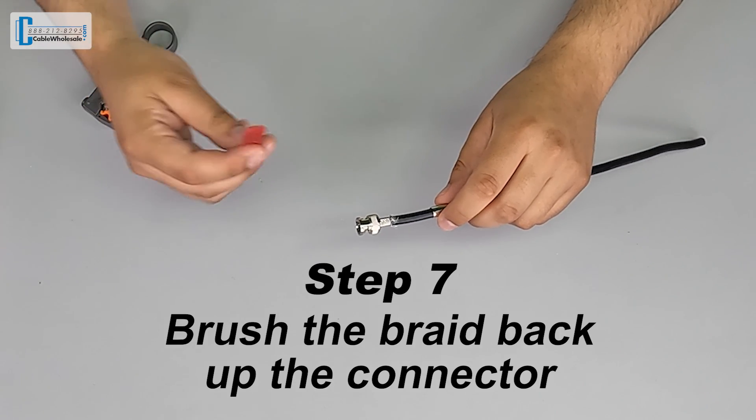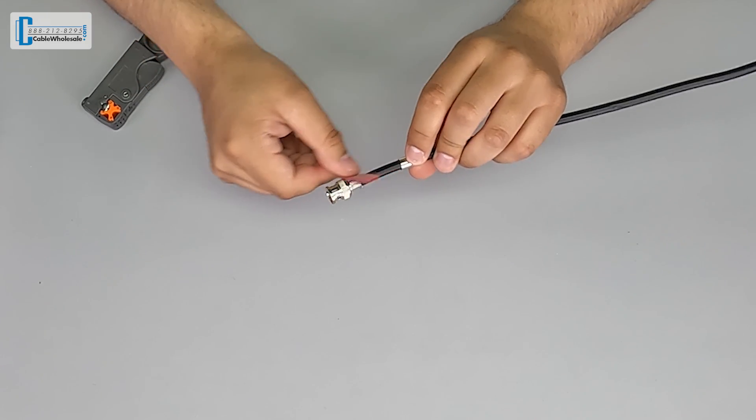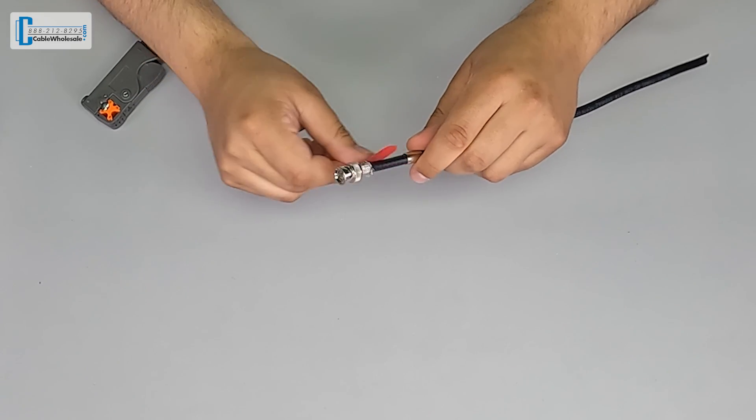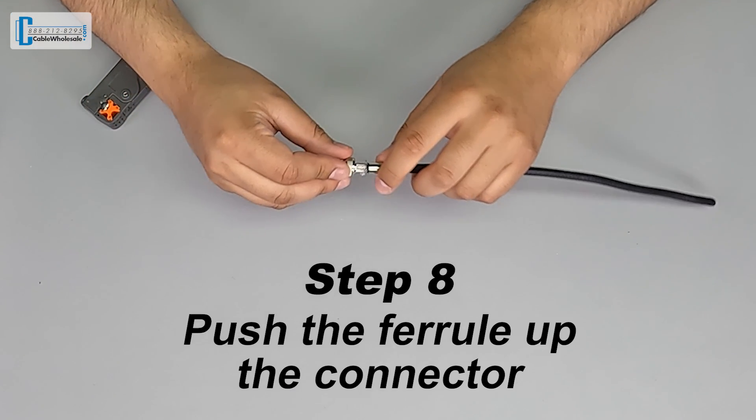Step seven, we're going to brush the braid back up around the base of the connector. For step eight, we're going to push the ferrule up around the base of the connector.